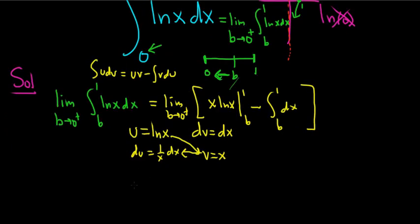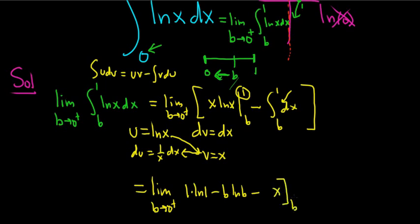So this is equal to limit B approaches 0 from the right. So you plug in the 1 first, so you get 1 times the natural log of 1, which is just 0, natural log of 1 is 0, minus B times the natural log of B. Minus, and then we're integrating this here. So it's going to be x, and we're going from B to 1. Let's keep going.